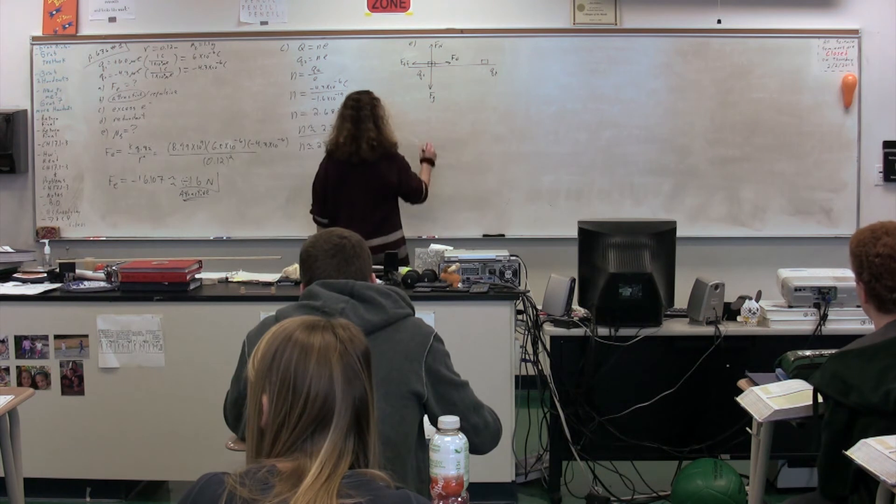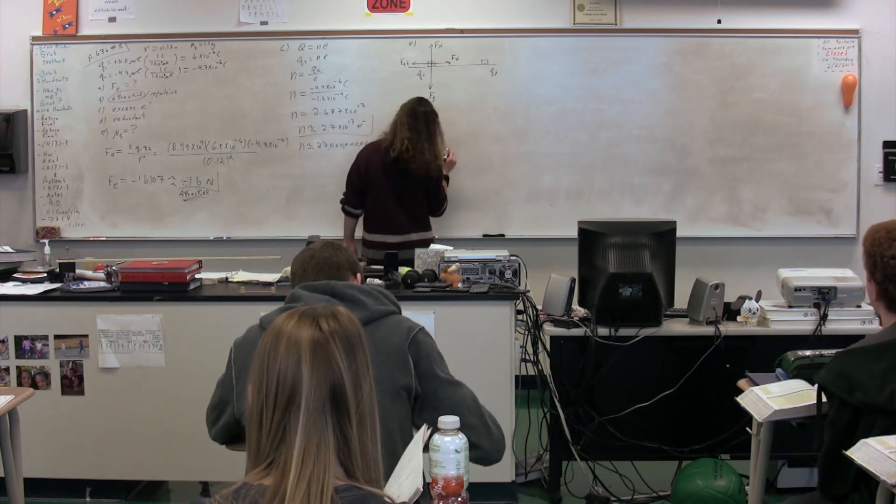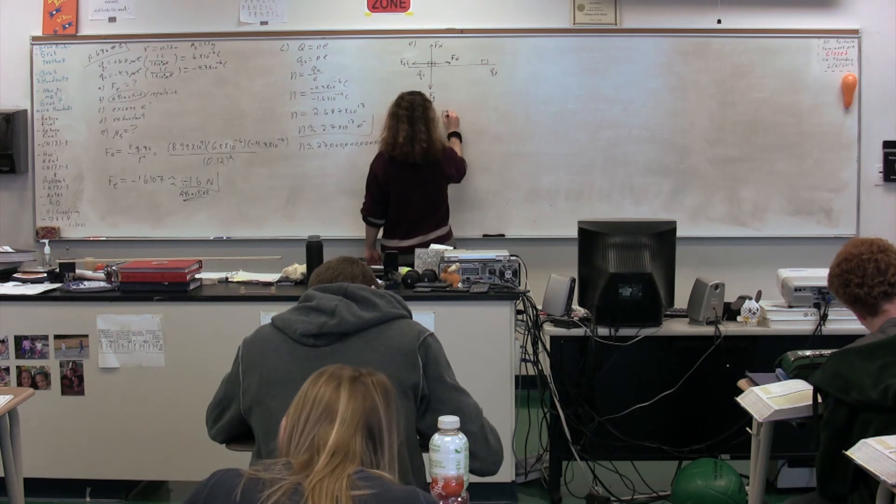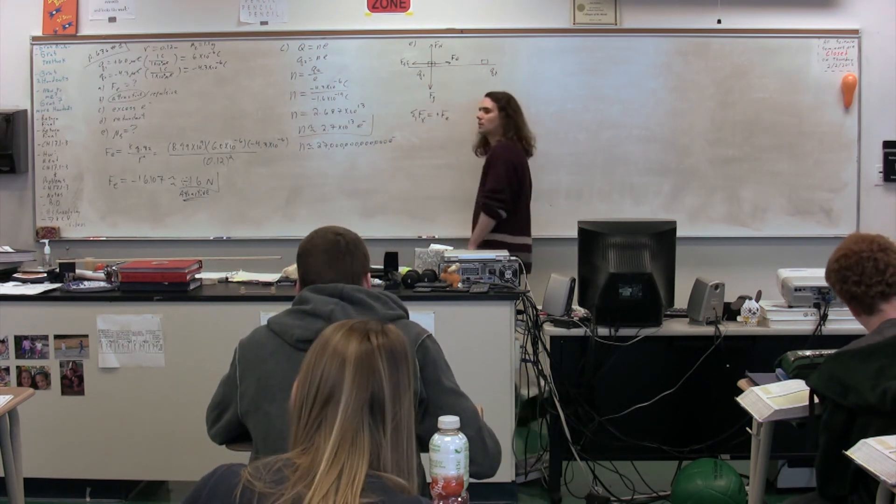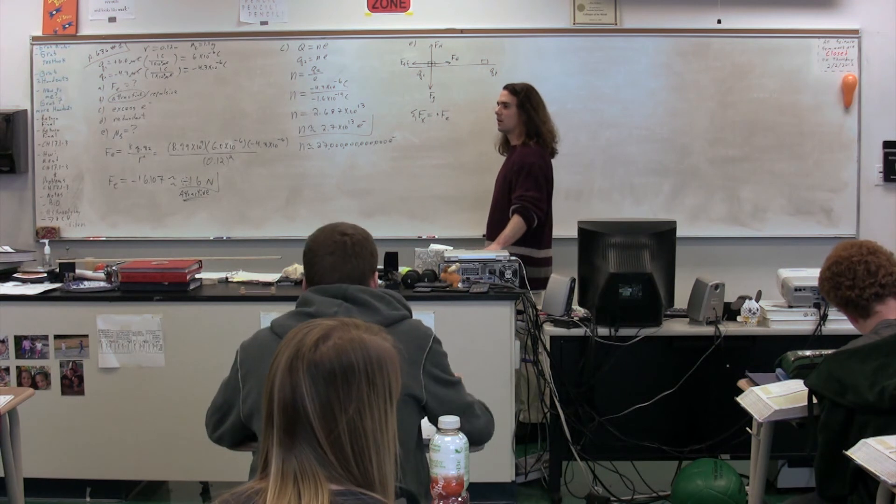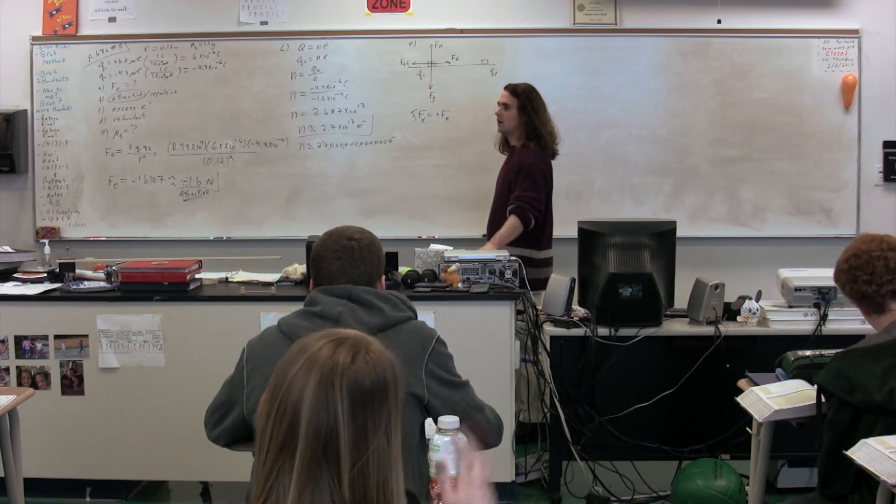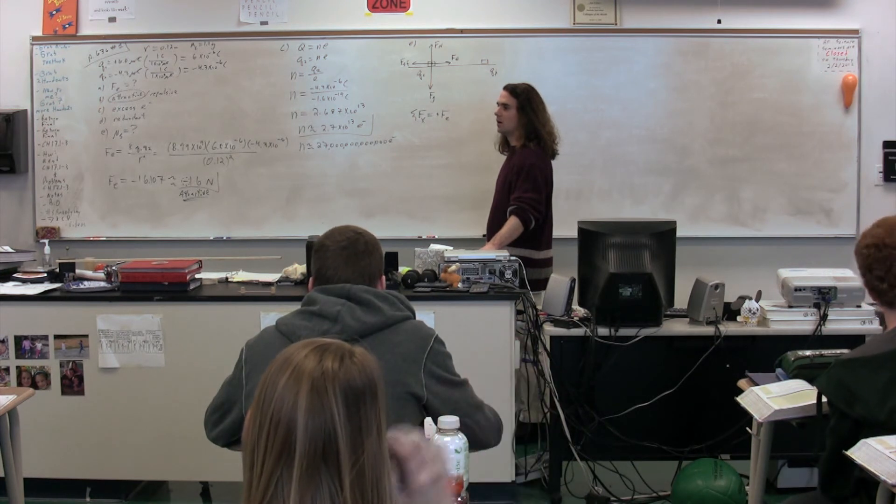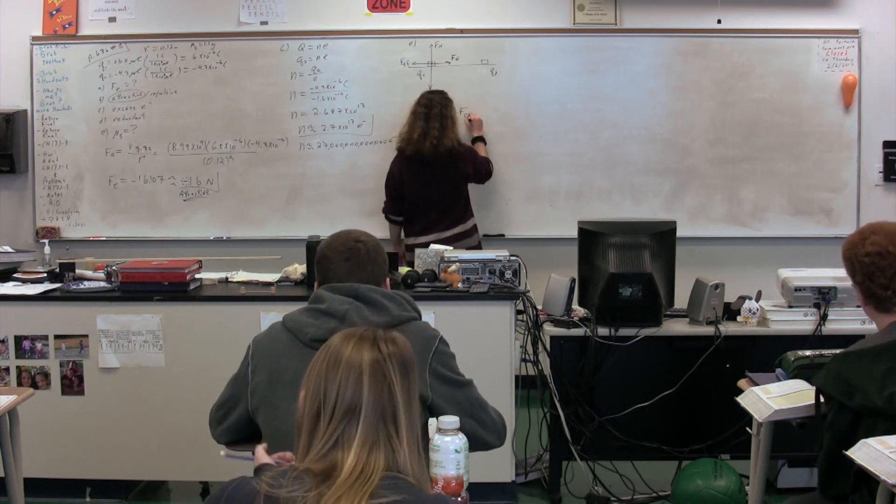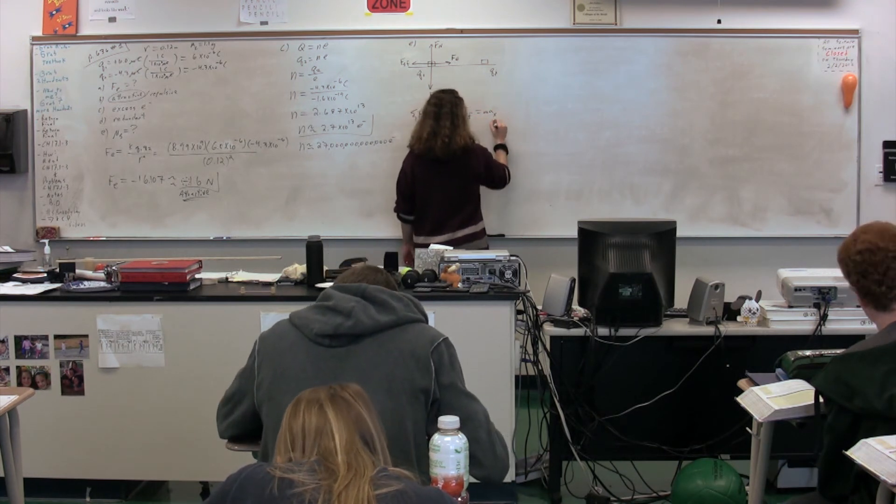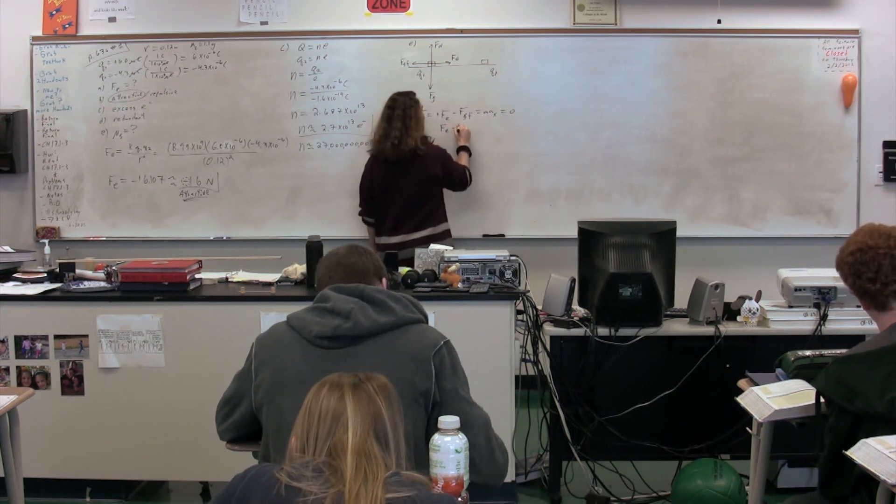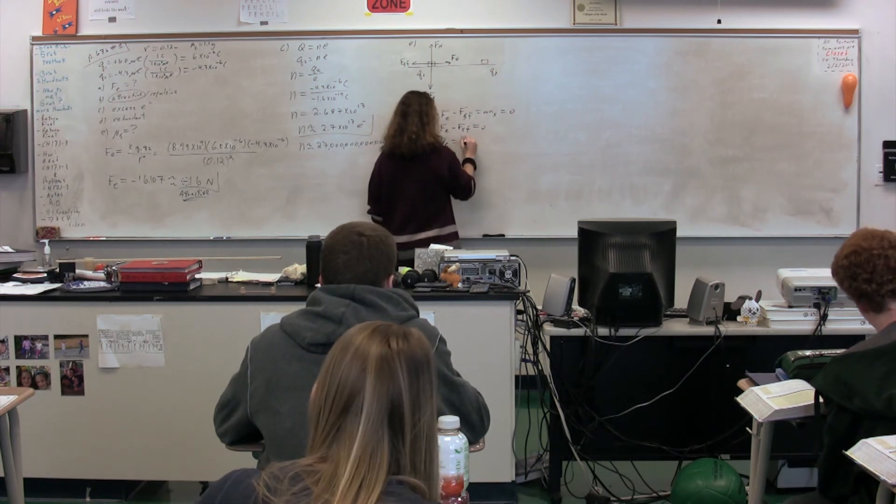We've drawn our free body diagram. David, what do we do next? Sum of the forces. Pick a direction. X direction. Sum of the forces in the X direction. F_E is positive. F_E stands for electric force. Keep going, David. Minus the force of static friction. Minus the force of static friction equals mass times acceleration. What direction? X direction. What's the acceleration in the X direction of the cork? Zero. Notice it's not going anywhere. So the electric force minus the force of static friction is equal to zero. In other words, the electric force equals the force of static friction.